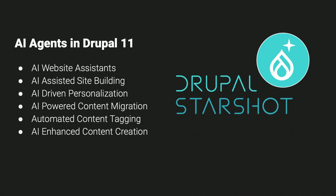The main improvements announced include AI website assistance, similar to what we're building today but within the Drupal project itself. There is an AI project and an AI agents project — the AI agents project is currently used by one website, so I'm not sure I'd recommend using it yet. Basically, this will provide an assistant for your end user in answering questions based on your Drupal site's content, using a RAG model without any external tools.